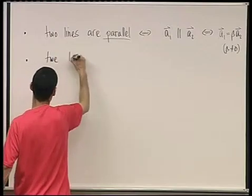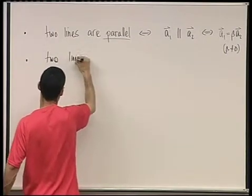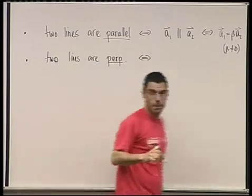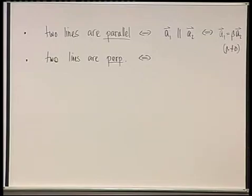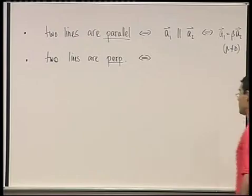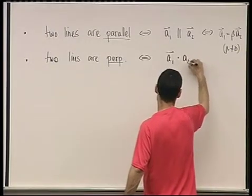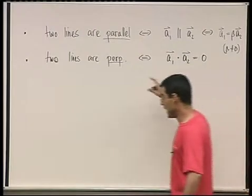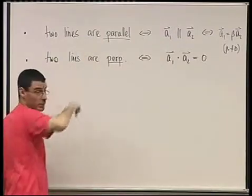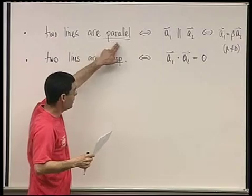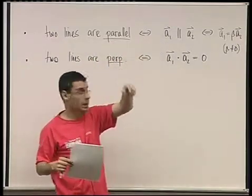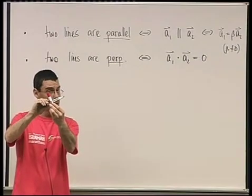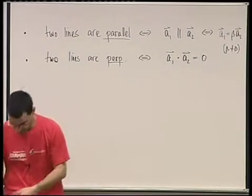Another one, bullet number two. Two lines are perpendicular if and only if the angle should be 90 degrees, hence the cosine should be zero, hence the dot product should be zero. So a1 dot a2 equals zero. And these two situations do not see if the lines intersect or not. In parallel, this actually includes the situation where there's the same line. And in perpendicular, it includes the situation where they either intersect perpendicularly or are skew perpendicularly.